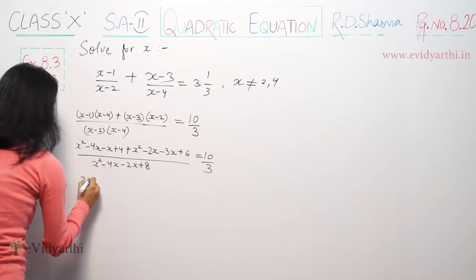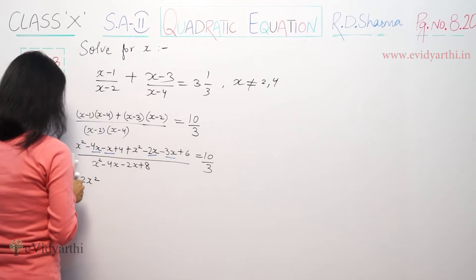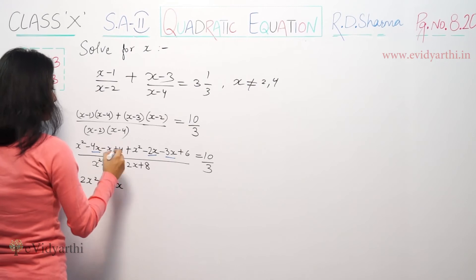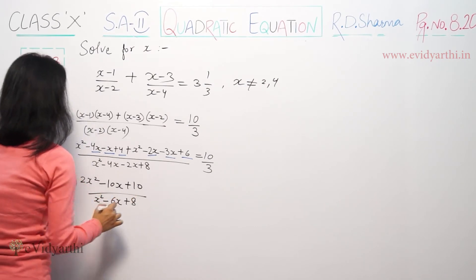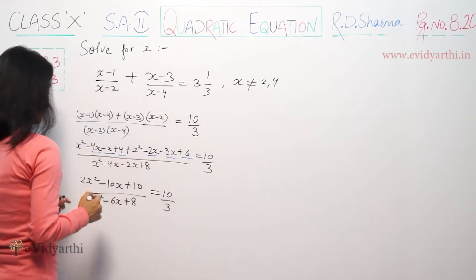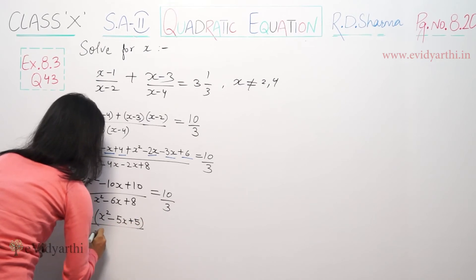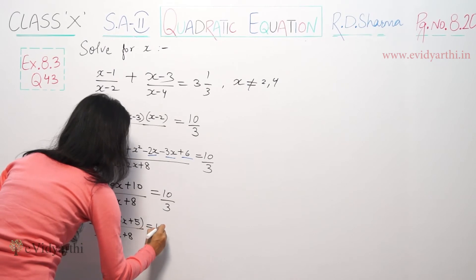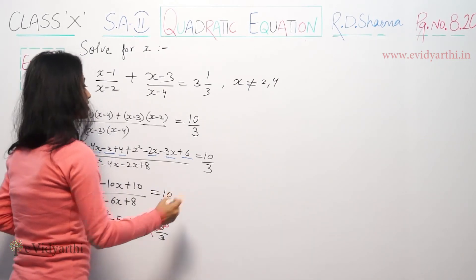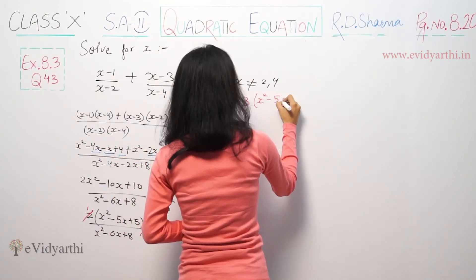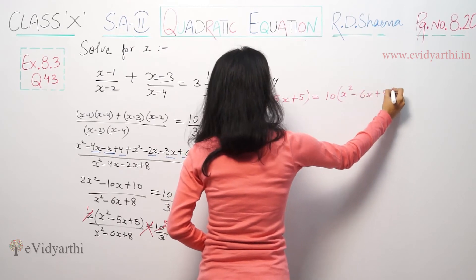Now from here: x² + x² is 2x², minus 4x minus x minus 5x minus 10x. 3 becomes minus 10x. Then plus 4 plus 6 is 10 upon x² minus 6x plus 8 is equal to 10/3. From here 2 common: (2x² - 10x + 10)/(x² - 6x + 8) = 10/3.